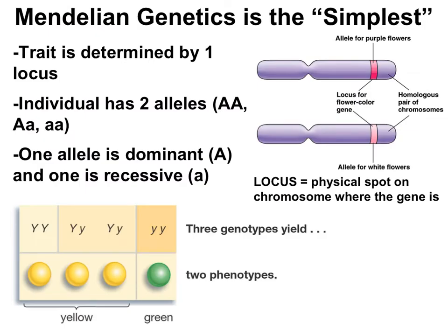Remember from our last video that Mendelian genetics follows three rules: the trait is determined by one locus or one gene, the individual has two alleles that influence that trait, where one allele is dominant and the other is recessive.